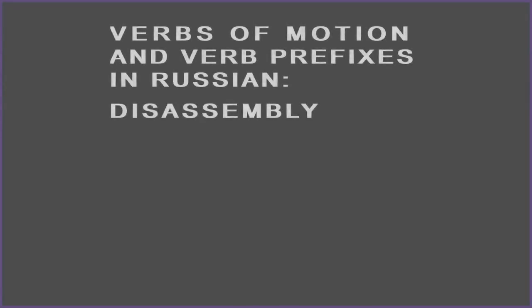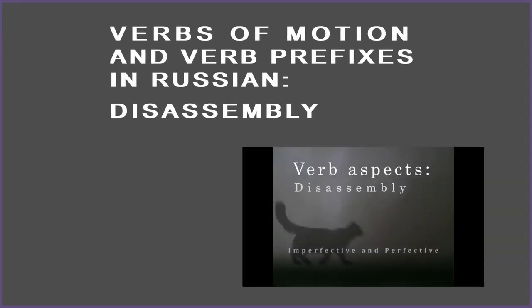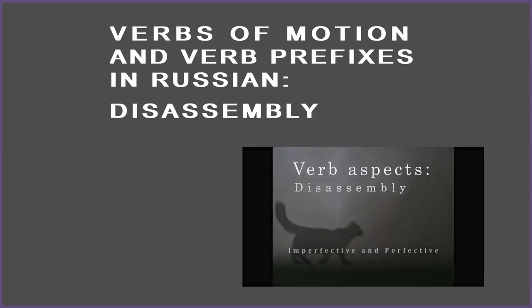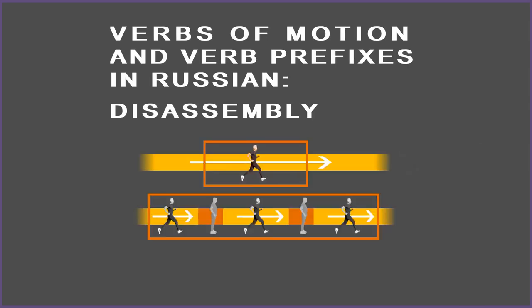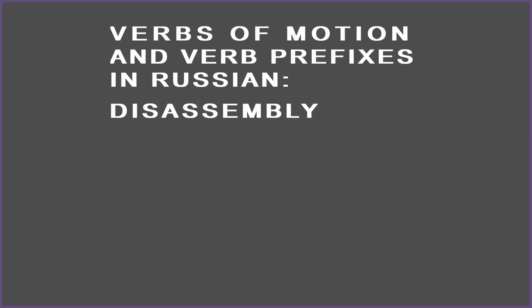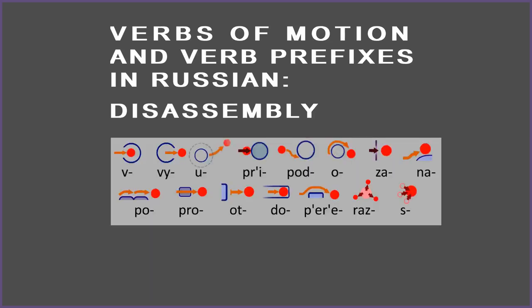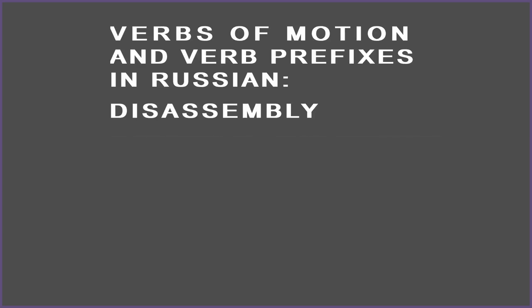For better understanding of what follows, you may want to first watch the video 'Verb Aspects Disassembly'. We'll look at two topics in Russian verb grammar. The first is verbs of motion, which are a subcategory of the imperfective aspect that exhibits a variation in the internal structure of processes. The second topic is verb prefixes that contribute specific semantics to the result of the action, conveyed by the perfective aspect.